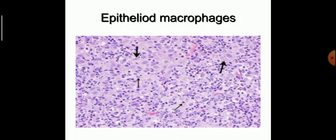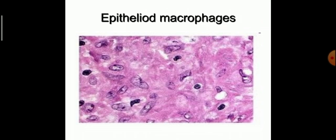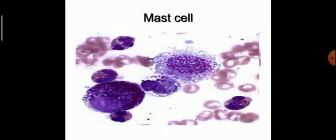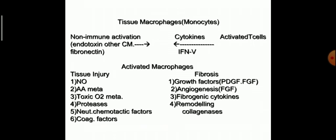This is the epitheloid macrophage — its morphology is like epithelial cells. There are also multinucleate epitheloid macrophages. Tissue macrophages or monocytes become activated macrophages through non-immune activation or activated T cells. The responsible tissue injury factors are nitric oxide, arachidonic acid metabolites, toxic oxygen metabolites, proteases, neutral chemotactic factors, and coagulation factors. For fibrosis, growth factors PDGF and FGF are important. For angiogenesis, FGF is important, along with fibrogenic cytokines and remodeling collagenases.